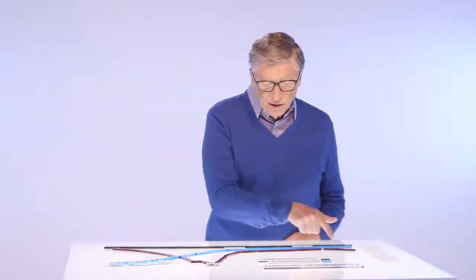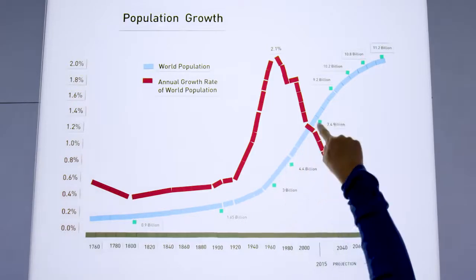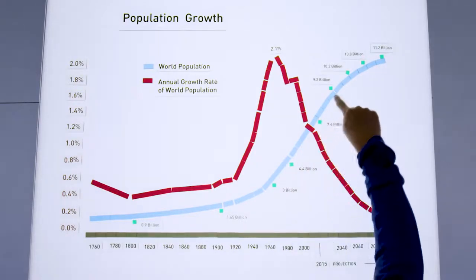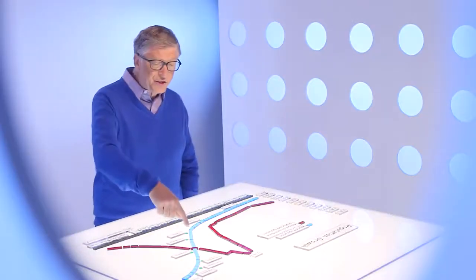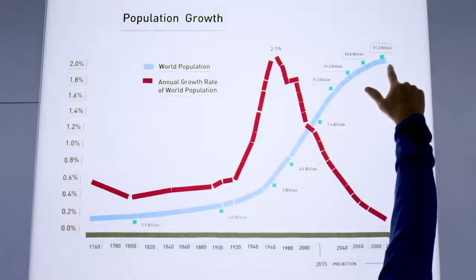So we've taken that chart that shows the global population growth and extended it out all the way to 2100. And we can see that instead of continuing, it actually flattens out.